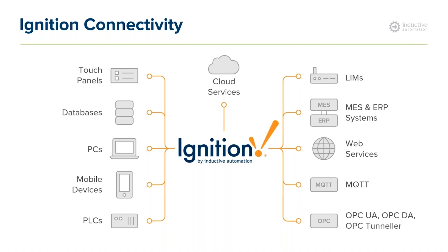Once data comes into Ignition, we can provide additional context and build a data model. We can also bring in data from LIMS devices, serial devices, data entered through screens, other systems via web services, or by reading files. There are all sorts of OT-side data that we want to bring into the business side — into a unified space where we can act on that data even further.